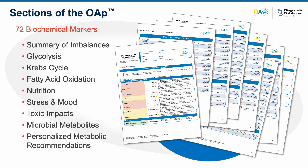Test sections include energy and mitochondrial processing, which includes glycolysis, Krebs cycle, and fatty acid oxidation pathways; nutritional assessments for several high-impact metabolic nutrients; stress and mood, which looks at neurotransmitter and catecholamine balance in addition to stress hormones; and toxic impacts and microbial metabolites.